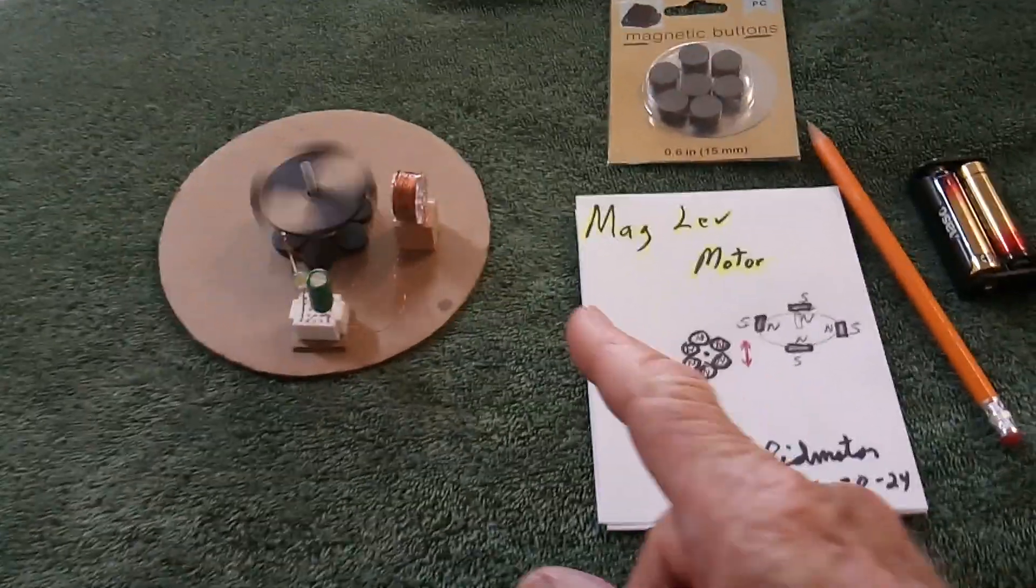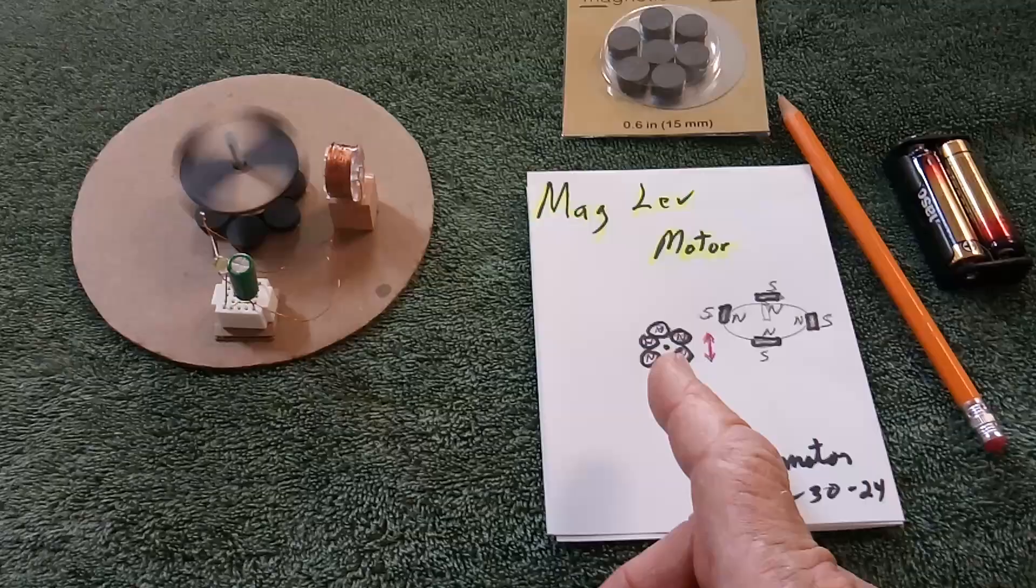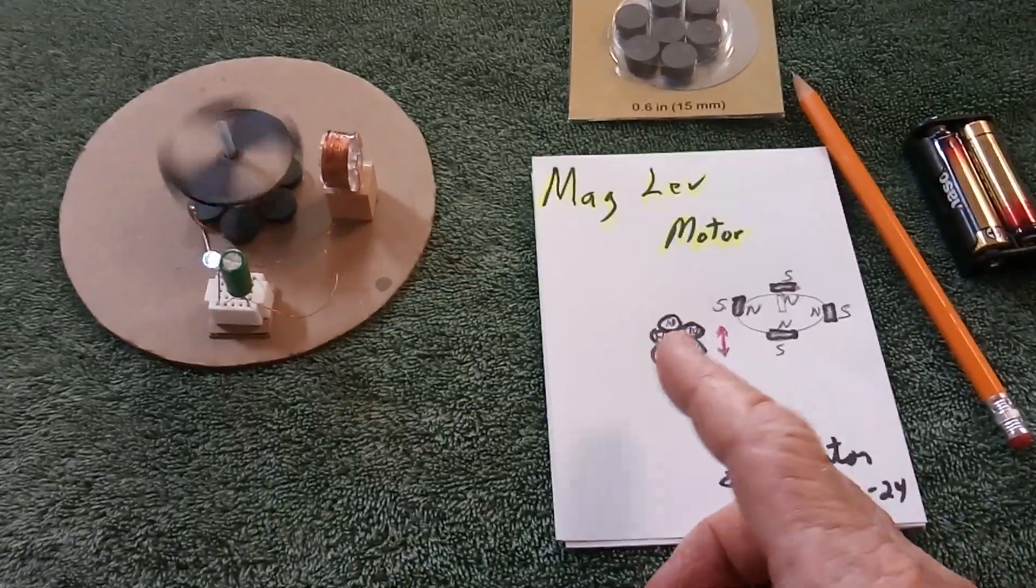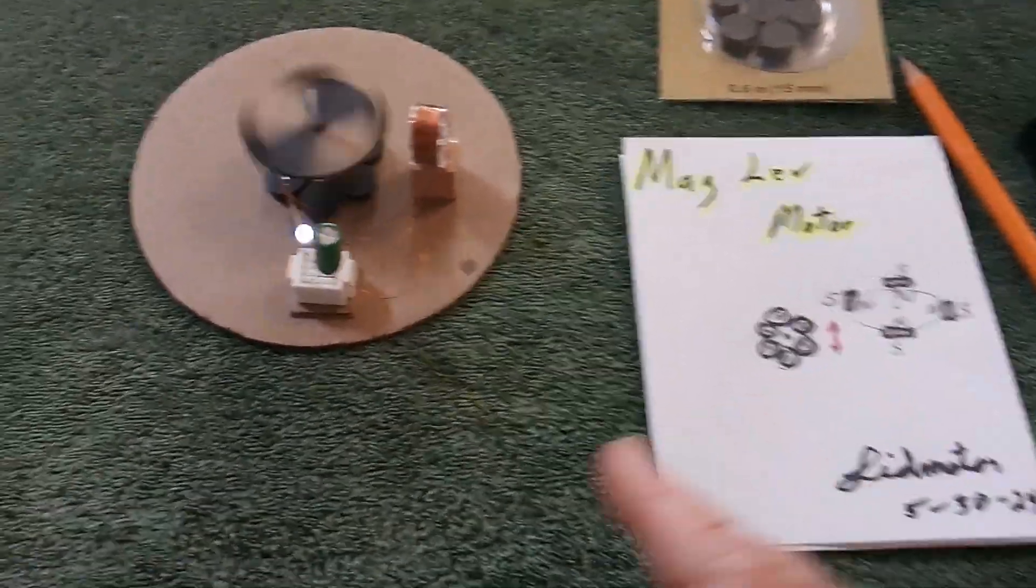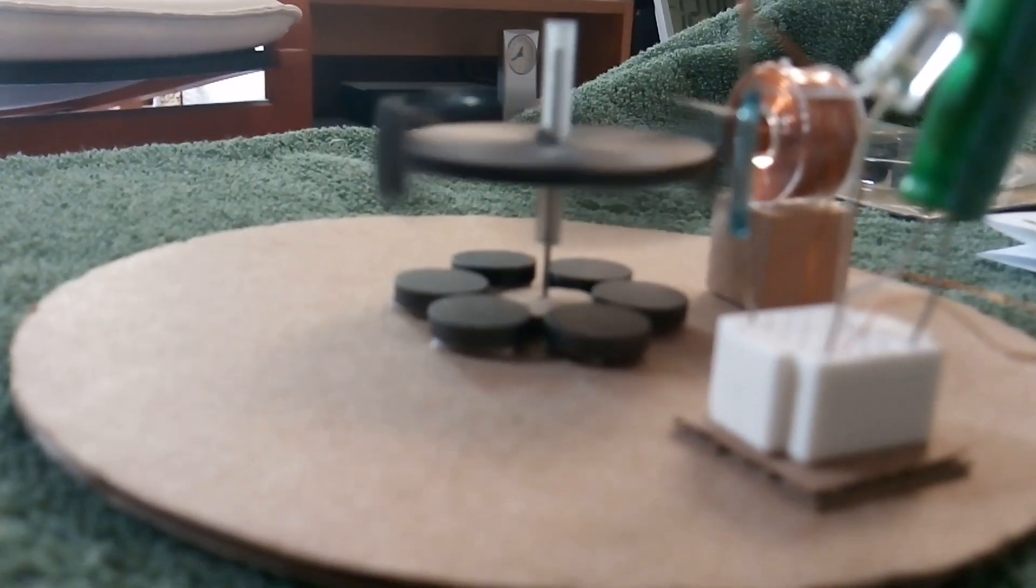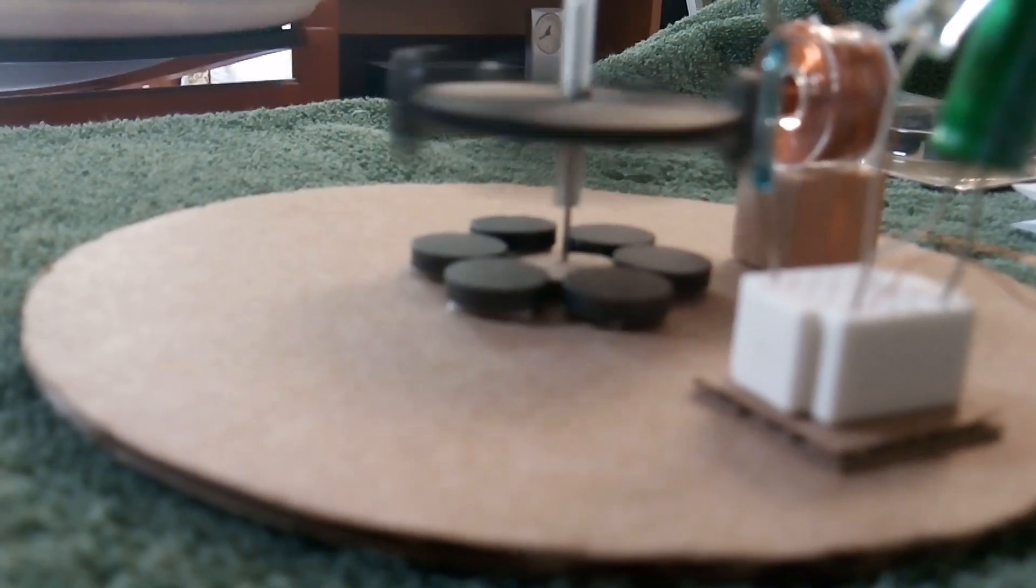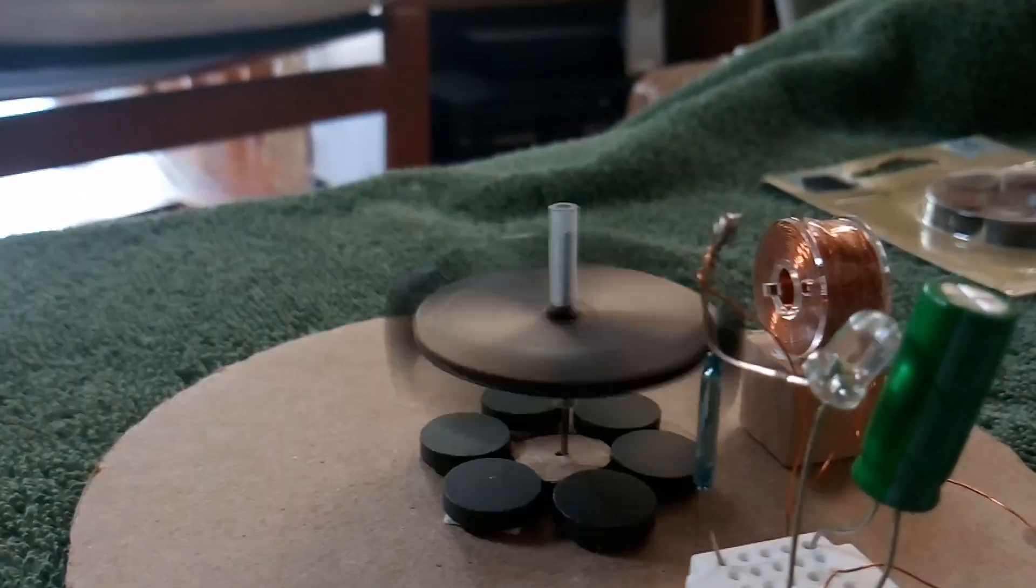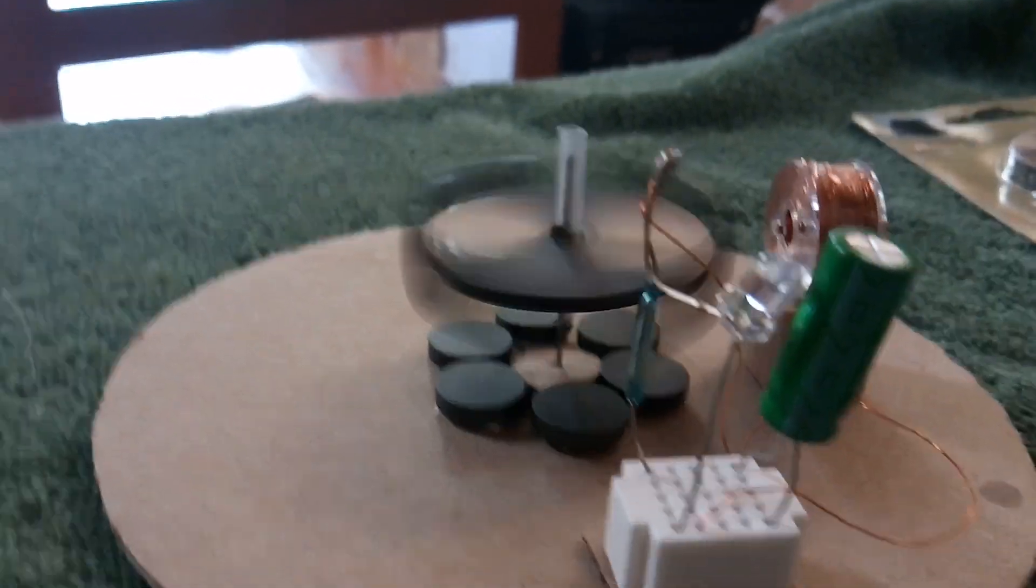What I have here is a maglev motor where you elevate the rotor using magnetics and repulsion. I did it a little different way. Usually you use a ring magnet on the bottom and a ring magnet on the rotor to push against one another to lift the rotor up off the base of the stator.